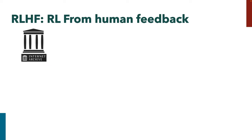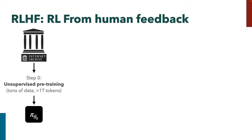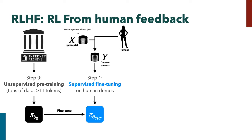Part one: Reinforcement Learning from Human Feedback. The way RLHF is done on big language models basically has four main steps, and the first two are pretty straightforward. Step zero is unsupervised pre-training — this is basically GPT-3. You take a ton of text from the internet — we're talking trillions of words — and you do unsupervised generative modeling: condition on a sequence, predict the next token, do this a lot on a lot of A100s for a lot of hours, and you get an unsupervised pre-trained model.